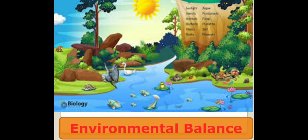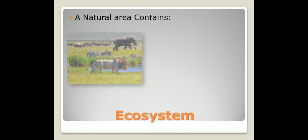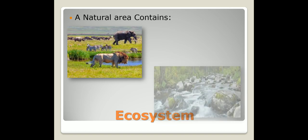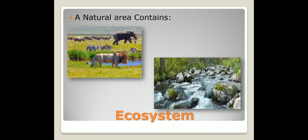So this is saprophytism. Let's start the second lesson: the environmental balance. First, let's talk about the ecosystem. The ecosystem is a natural area that contains living organisms like plants and animals, and non-living things like water, soil, and rocks, and so on.